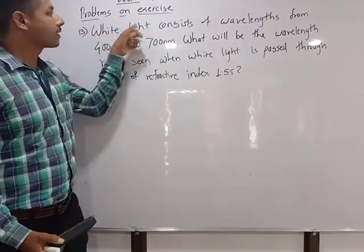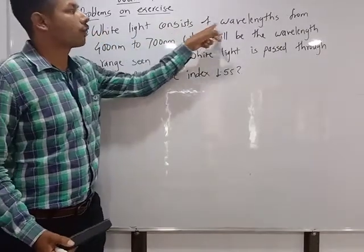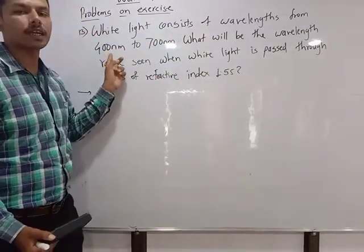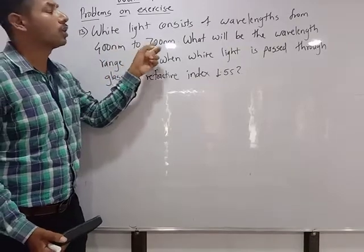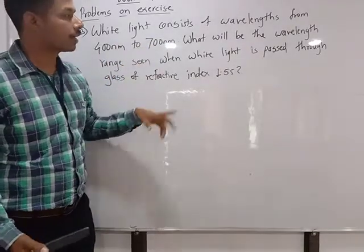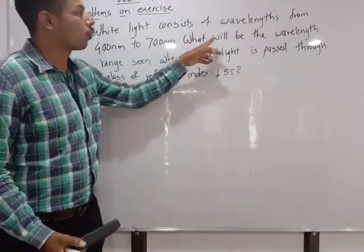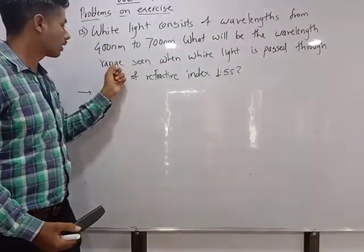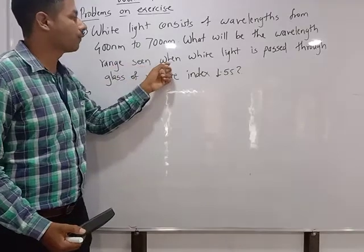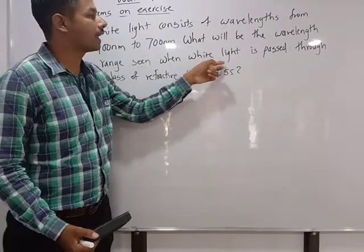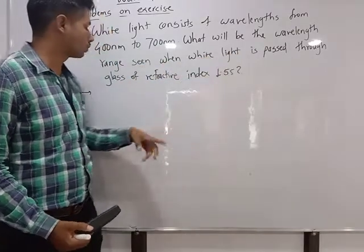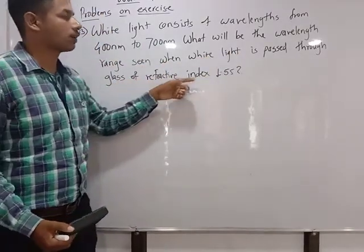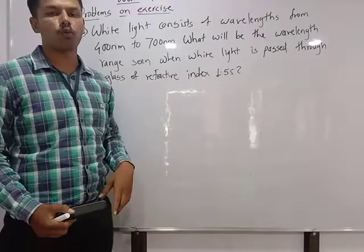This is the first problem: White light consists of wavelengths from 400 nm to 700 nm. What will be the wavelength range seen when white light is passed through glass of refractive index 1.55?